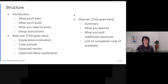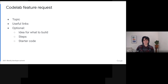At the end, there's a summary with links to resources in case the reader wants to learn more. You don't need to have all of the parts of a codelab ready in order to make a feature request. You can start by just telling us the topic, and including links for anyone else who wants to get started writing.